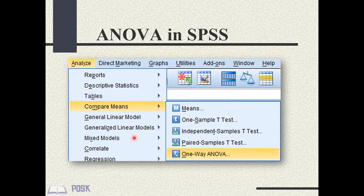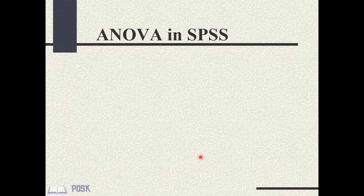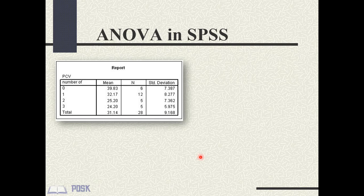To do ANOVA in SPSS, click Analyze, then go to Compare Means, and click on One-Way ANOVA. SPSS produces the result in the output window. The first table shows the mean and standard deviations of the four categories of number of bones fractured. We can see that the mean PCV decreases with increasing number of bones fractured — for example, the mean PCV of patients with no bone fracture is 39.83, which decreased to 24.20 in those with 3 bones fractured.